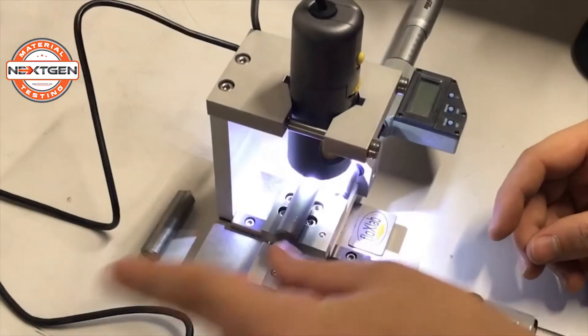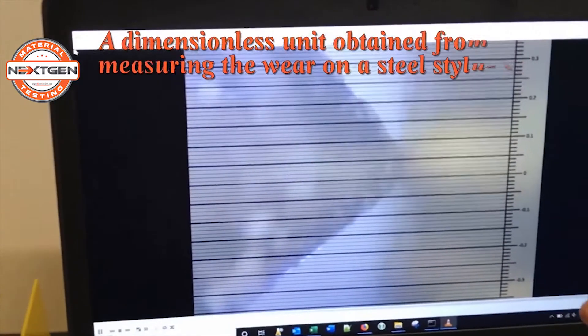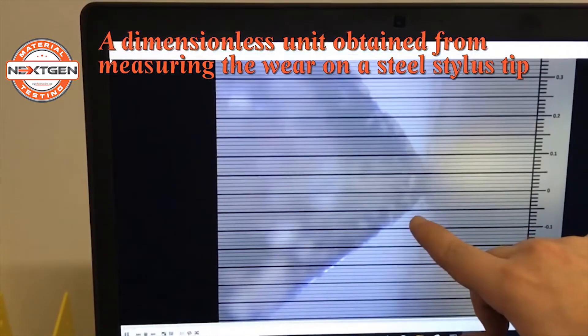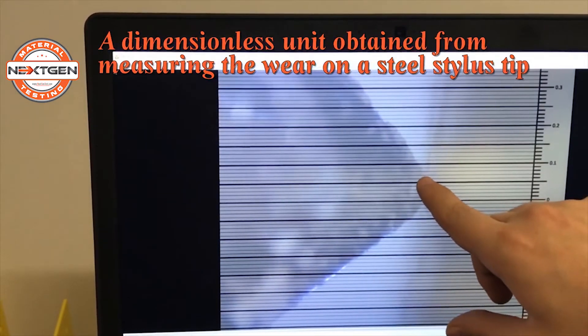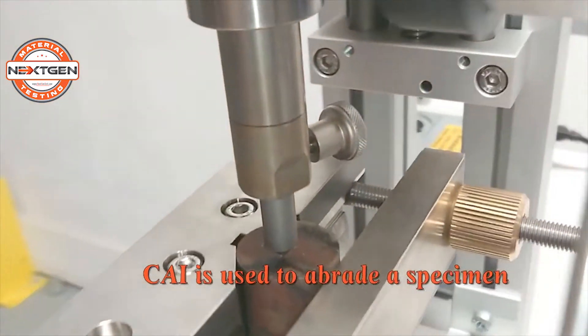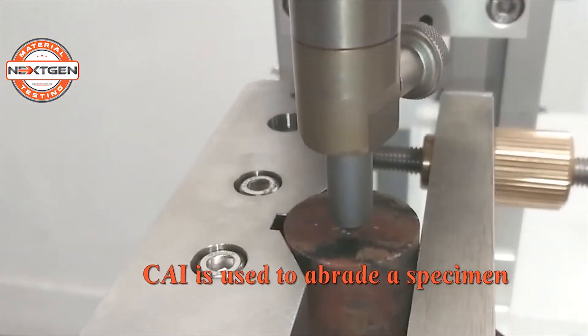The Searcher Abrasivity Index is a dimensionless unit obtained from measuring the wear on a steel stylus tip after it has been used to abrade a specimen with a 70 N normal force.